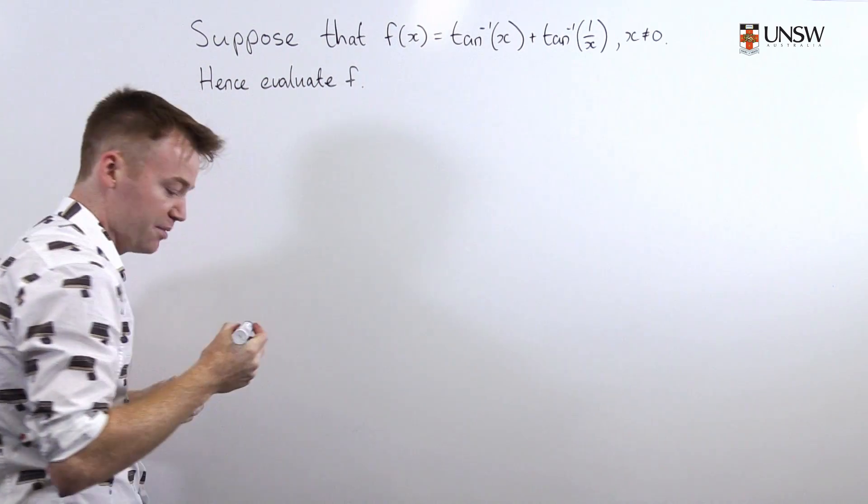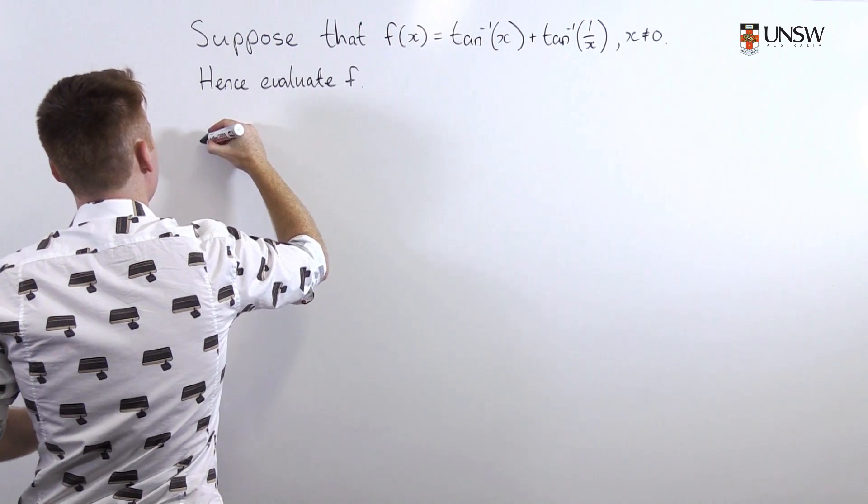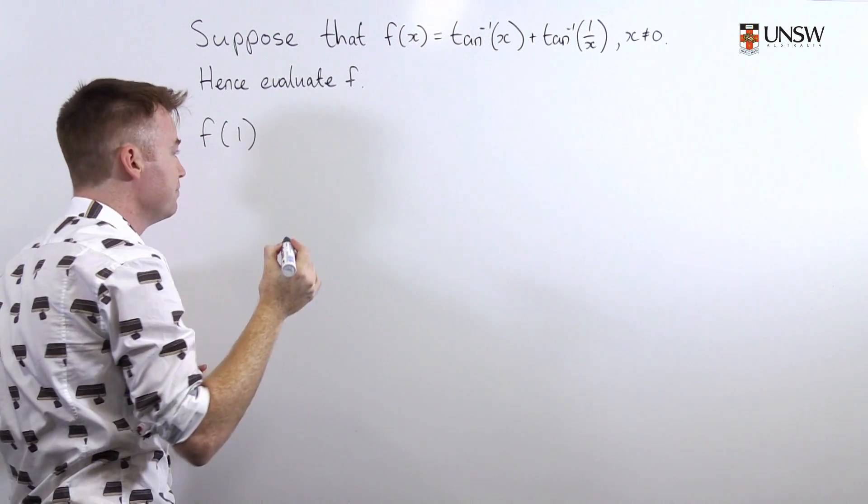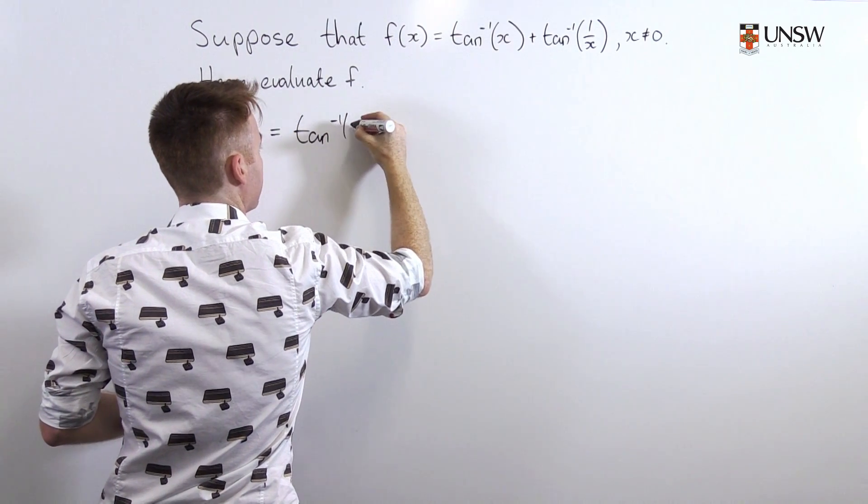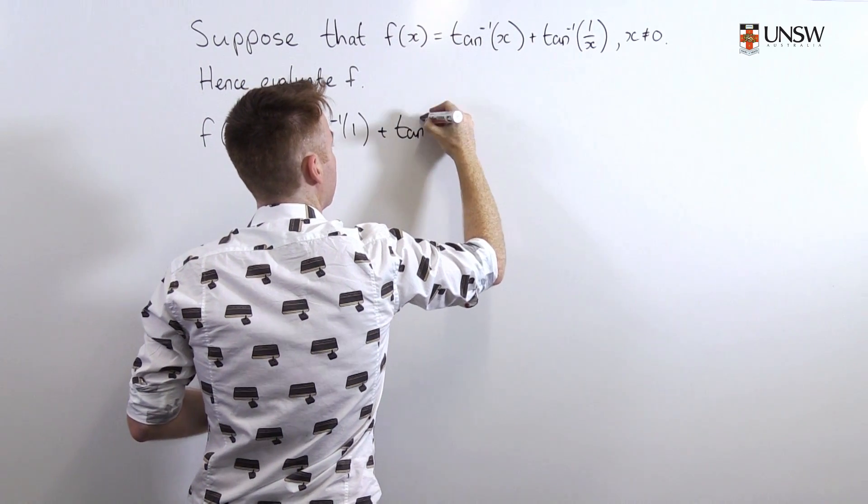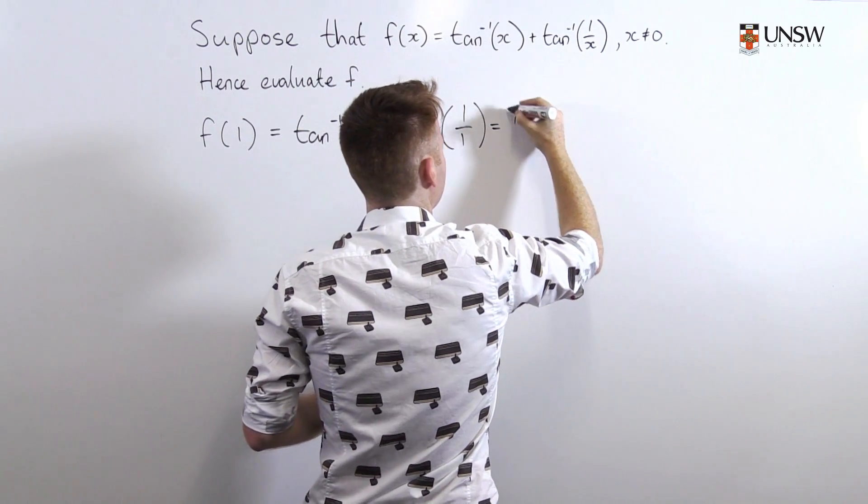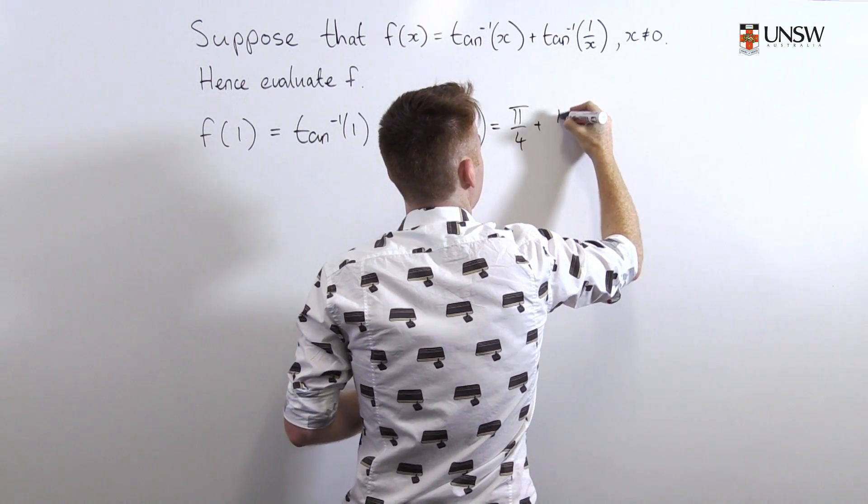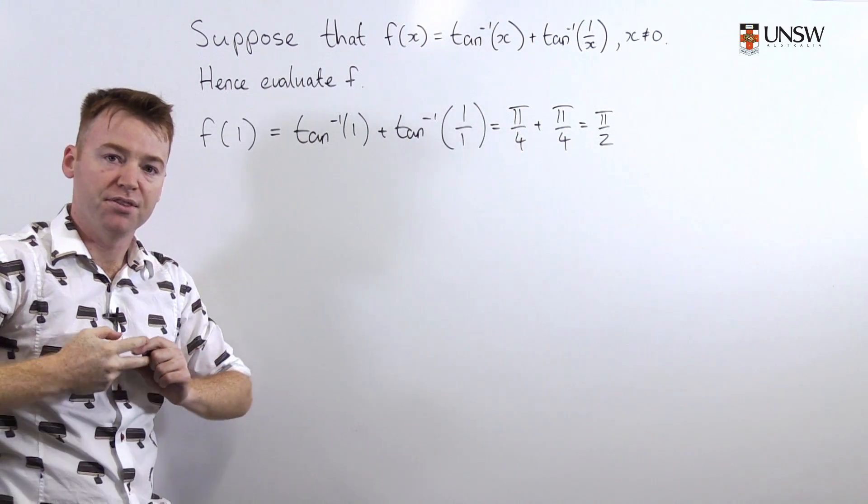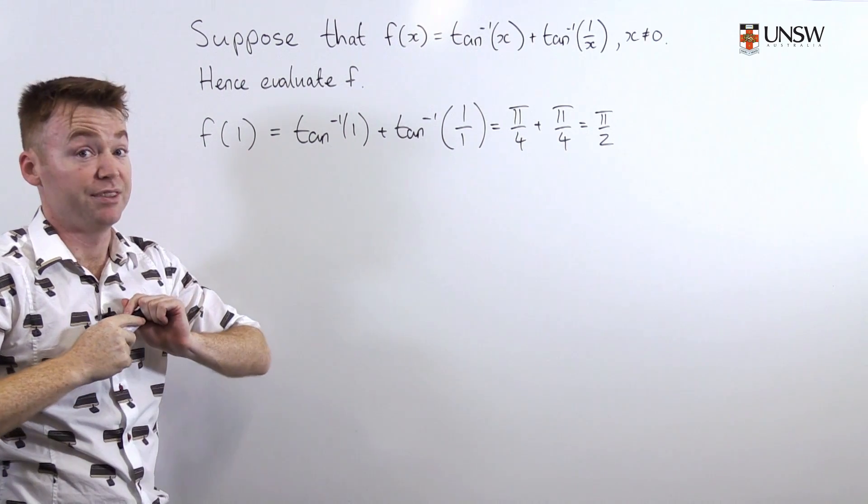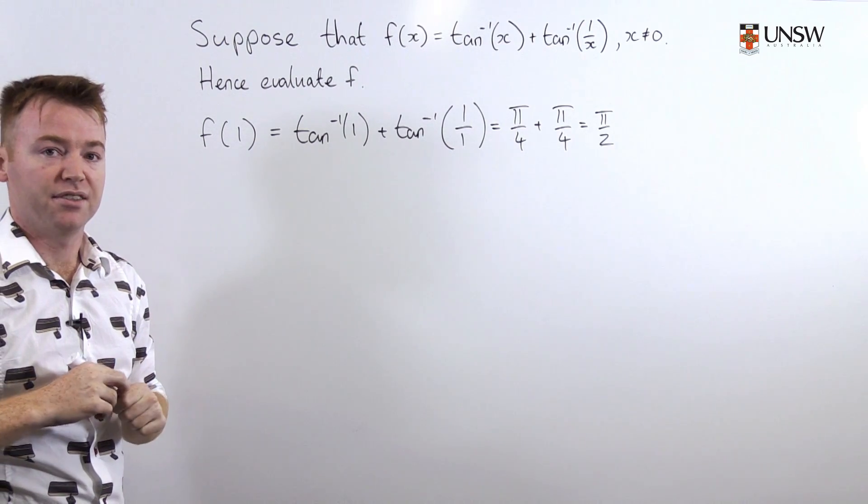Let's have a look at what x might be on the positive x-axis. And we can do that by just evaluating the function at one point. f(1) equals tan⁻¹(1) plus tan⁻¹(1/1) which is equal to π/4 plus π/4 which is π/2. And because the derivative is constant, sorry because the derivative is 0, f(x) is π/2 for all x greater than 0.